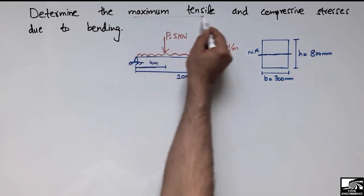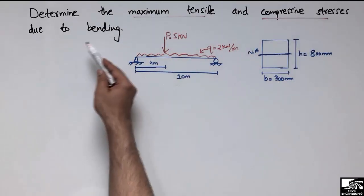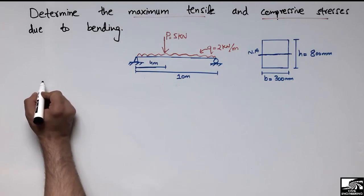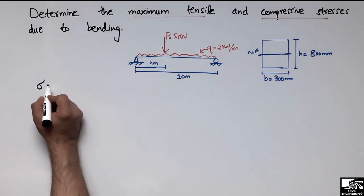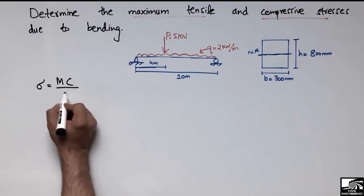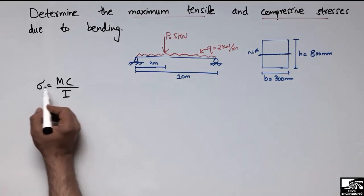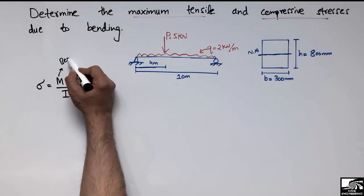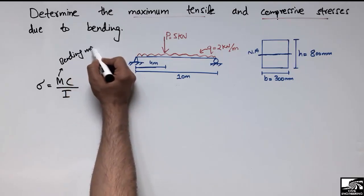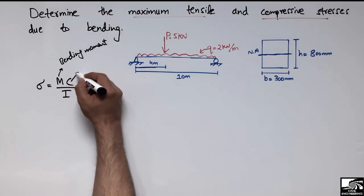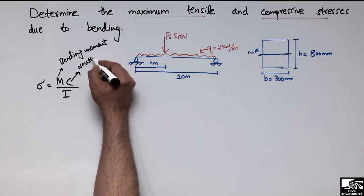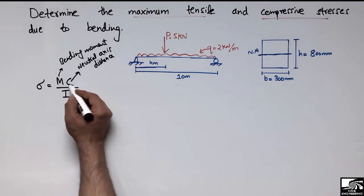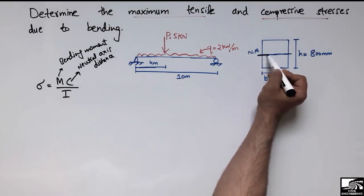This diagram shows the neutral axis of the cross-section. We need to find the maximum tensile stresses and maximum compressive stresses due to bending in this beam. To find the tensile and compressive stresses we use the bending stress formula: sigma equals M times c divided by I, where M is the bending moment value and c is the neutral axis distance.